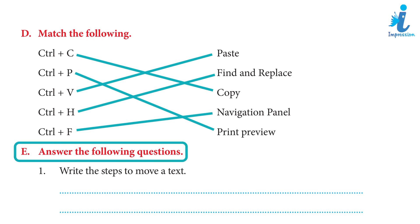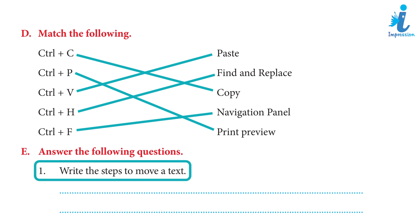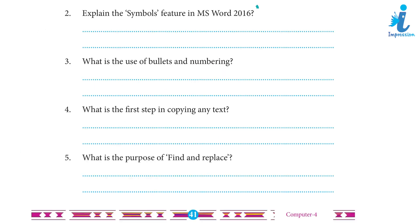E. Answer the following questions. 1. Write the steps to move a text. Steps: 1. Select the text you want to move. 2. Click the Cut command on the Home tab. Alternatively, you can press Ctrl+X on your keyboard. 3. Place your cursor at the point where you want the text to appear. 4. Click the Paste command on the Home tab. Alternatively, you can press Ctrl+V on your keyboard.